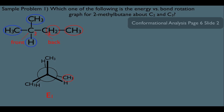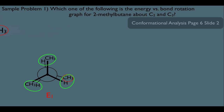Now let's do a quick energy analysis. Let's see what types of eclipsing interactions we have. Notice at the top we have a methyl eclipsing with a hydrogen, over here we have a methyl eclipsing with a hydrogen as well, and we also have a methyl eclipsing with a hydrogen. So in terms of energy level, this molecule has three methyl-hydrogen eclipsing interactions. That would correspond to a certain amount of energy.